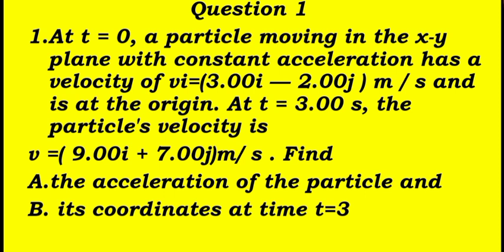I'm going to talk to you about problem solving. Question: At t which is equal to zero, a particle moving in the xy plane with a constant acceleration has an initial velocity of 3i minus 2j meter per second and is at the origin. At time t equal to 3 seconds, the particle velocity is v equal to 9i plus 7j meter per second. Find the acceleration of the particle and b, its coordinates at time t equal to 3 seconds.